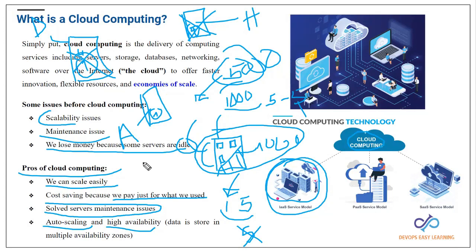If Dallas gets flooded and that data center goes down, you still have two more servers running — that's what we call high availability. If you owned your own data center, having three separate data centers would be extremely expensive. Most companies would just have one data center with all servers in the same location, creating a single point of failure.